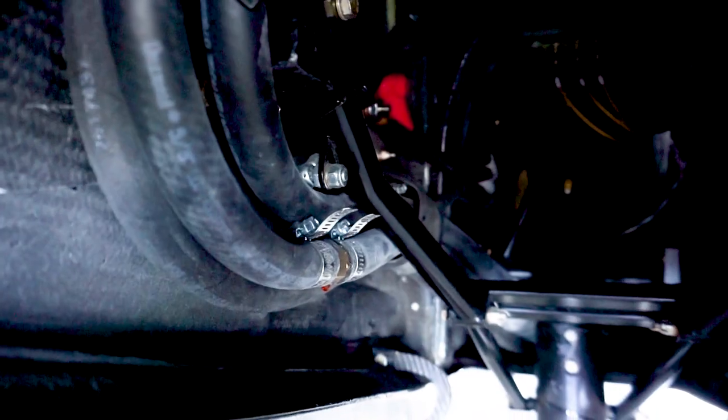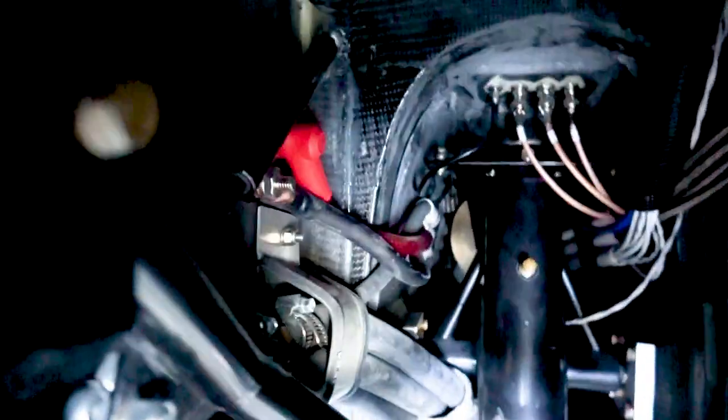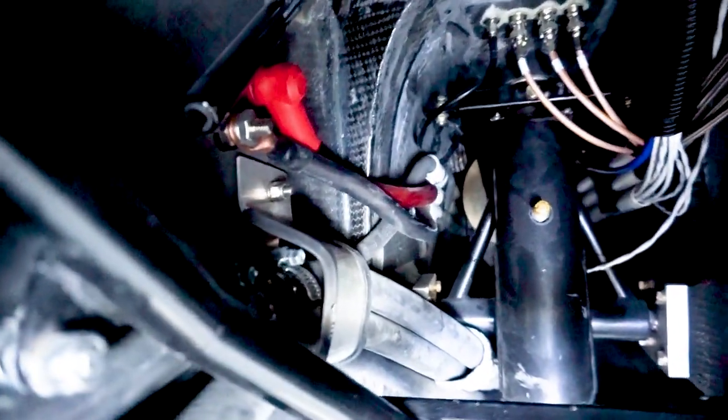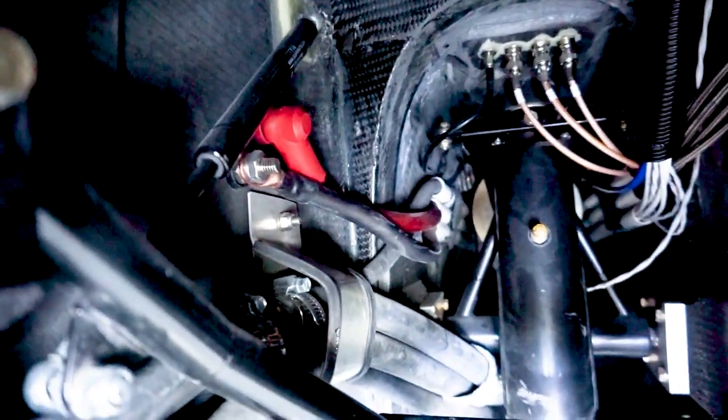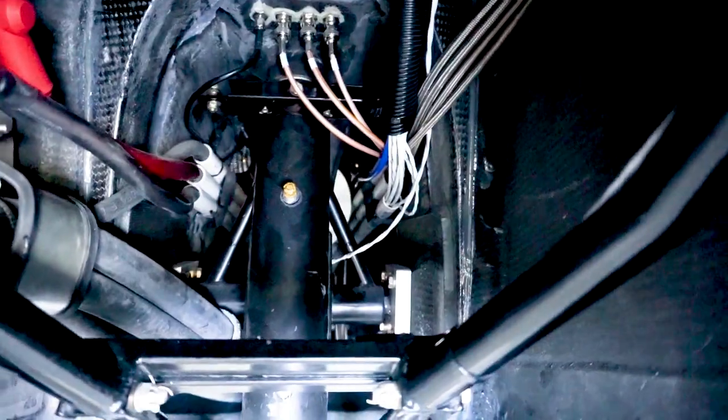We have the lines here running for the heater and air conditioning system down the keel to the engine. We also have your main power lines over there on the left, the battery positive and negative running down to the engine, and all the rest of the wiring on the right hand side.